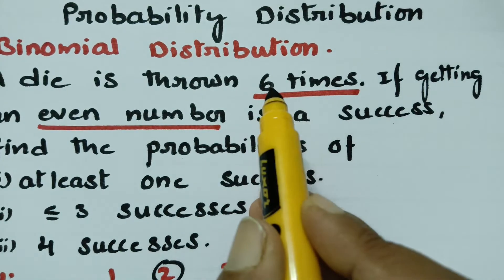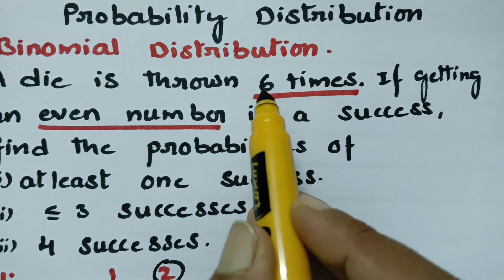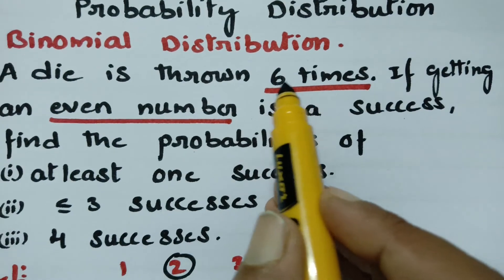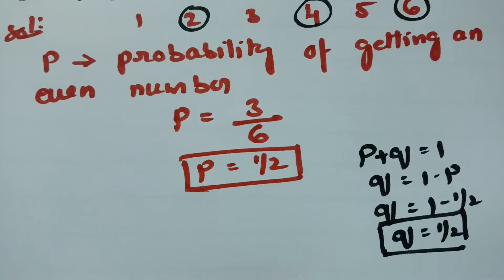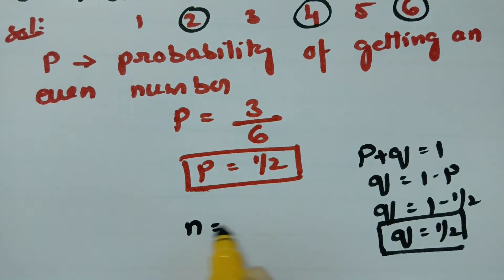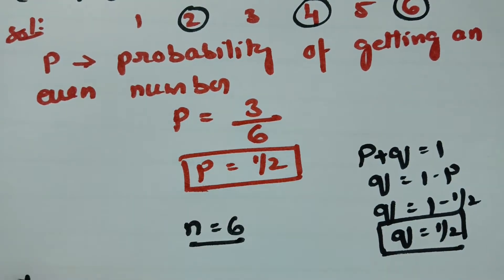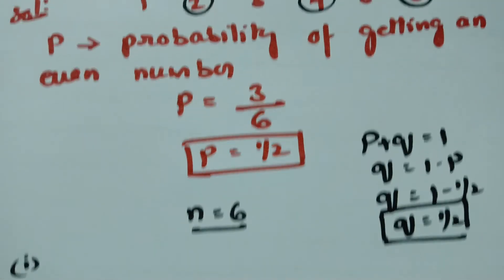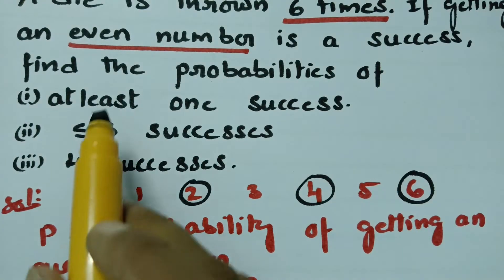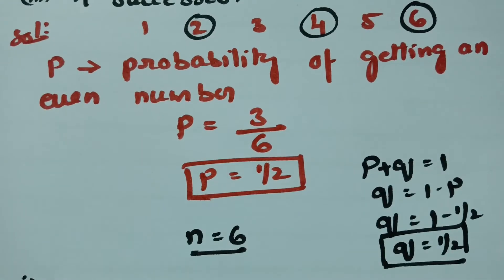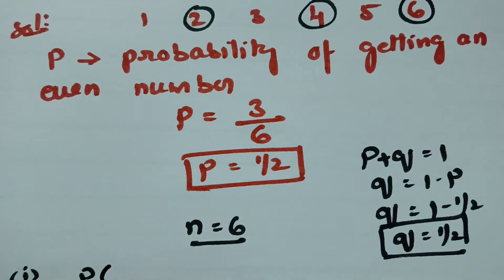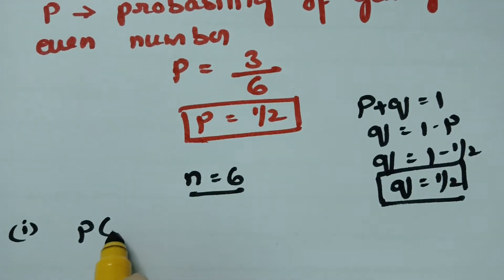From the question, a die is thrown 6 times, so N is equal to 6. The first solution: at least 1 success means P(R ≥ 1).